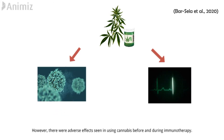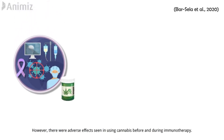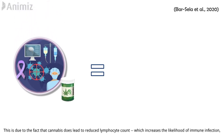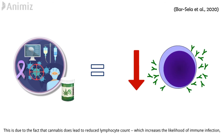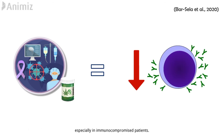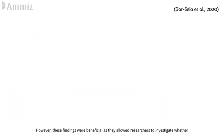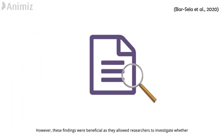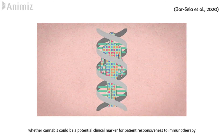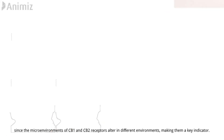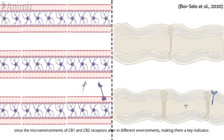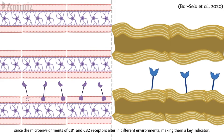In another study, medicinal cannabis did lead to a significant decrease in both tumor progression and overall survival; however, there were adverse effects of using cannabis before and during immunotherapy. This is due to the fact that cannabis leads to a reduced lymphocyte count, which increases the likelihood of immune infection, especially in immunocompromised patients. However, these findings were beneficial as they allowed researchers to investigate whether cannabis could be a potential clinical marker for patient responsiveness to immunotherapy, since the microenvironments of CB1 and CB2 receptors alter in different environments, making them a key indicator.